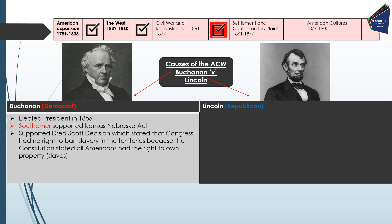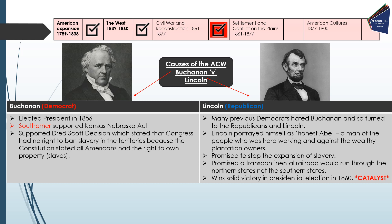We then see Abraham Lincoln, the Republican candidate, emerge. Many previous Democrats had hated Buchanan and turned to the Republicans and Lincoln instead. Lincoln portrayed himself as 'Honest Abe' — a man of the people, hardworking and against the wealthy plantation owners. He promised to stop the expansion of slavery — not ban it outright — and also promised a transcontinental railroad running through the northern states. He was clearly more pro-Northern, and he won a solid victory in the presidential election in 1860, which is really the catalyst that led to the outbreak of war.